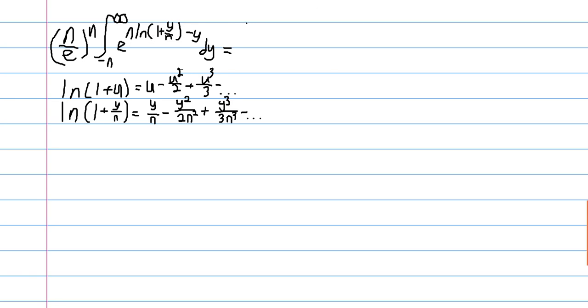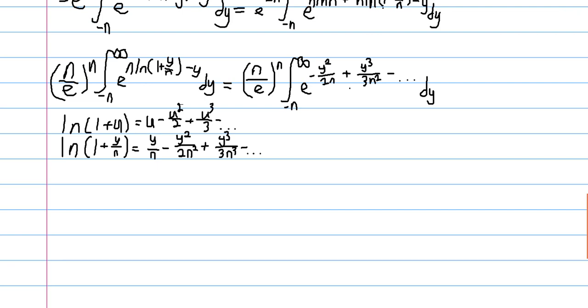So, substituting this. And also, notice that we're multiplying by n this whole series. And so, we get a term of y that cancels out with this negative y. So, if you're confused why there's no linear term, that's why. So, we get the following integral. We just have e to this series.